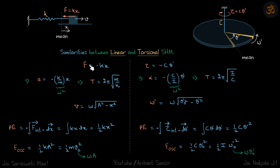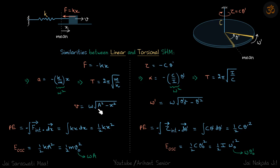Now for linear SHM: the restoring force is kx, so F = −kx (taking the right side as positive). Acceleration = F/m = −(k/m)·x. The quantity k/m equals omega-squared, where omega is the angular frequency of SHM. This gives time period T = 2π√(m/k). The velocity when the body is at distance x is: v = omega·√(A² − x²).